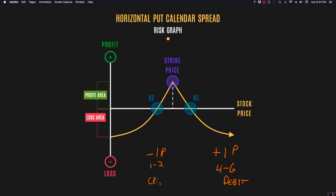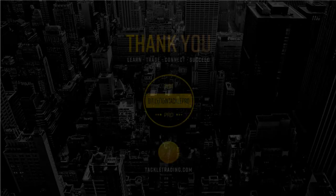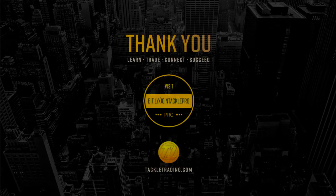The long put generates a debit when you buy, and the short put generates a credit. That's really where you receive the profit. If the price stays in between the two break-even points as anticipated, the profit will be generated in that profit zone. Both legs share the same strike price.